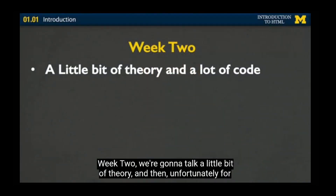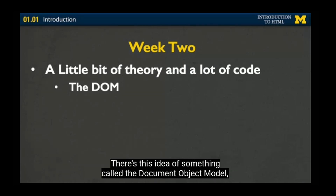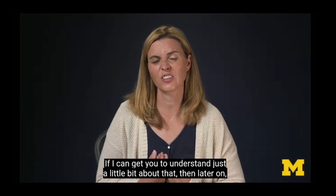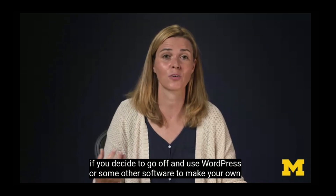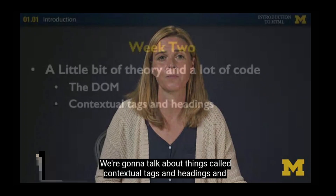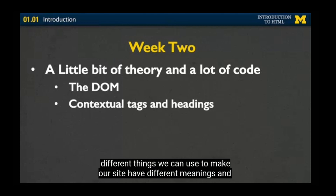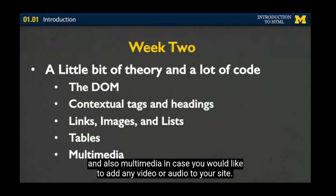In week two, we'll talk a little bit of theory and then a lot of code. There's this idea called the document object model upon which all web pages are built — if you understand just a little about that, you'll better understand tools like WordPress later on. We're going to talk about contextual tags, headings, links, images, lists, tables, and multimedia in case you'd like to add video or audio to your site.